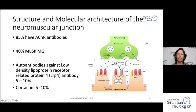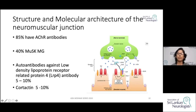In myasthenia gravis, antibodies form against the acetylcholine receptor. Normally, released acetylcholine is immediately broken down by acetylcholinesterase, which is complexed with the collagen Q molecule on MuSK receptors. There is also an important receptor called LRP4 — lipoprotein-related receptor protein 4 — which, together with the MuSK receptor, keeps acetylcholine receptors concentrated at the neuromuscular junction.